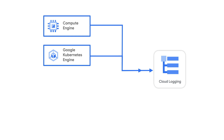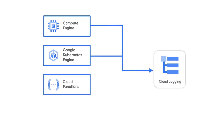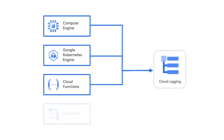As an example, you can move a workload to GCE, run a new GKE cluster, and set up some serverless functions and have all of those logs automatically sent to Cloud Logging.